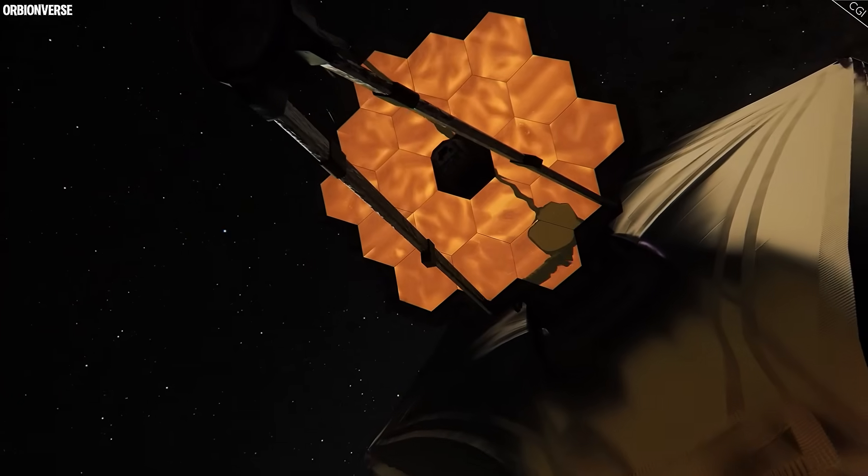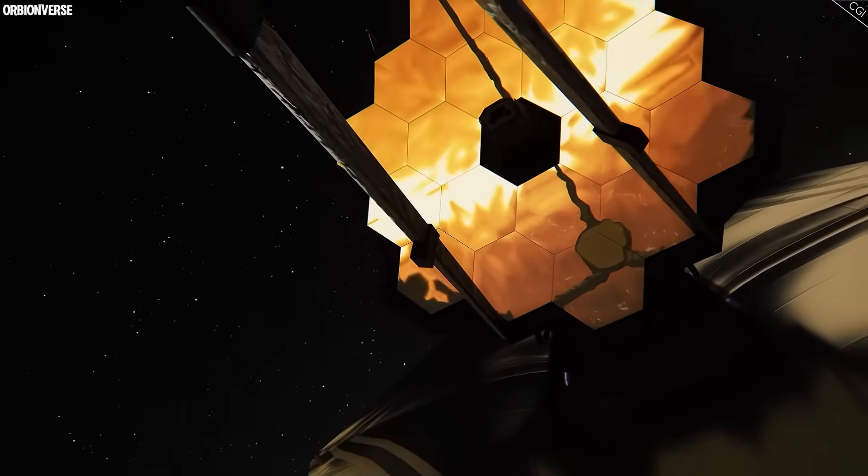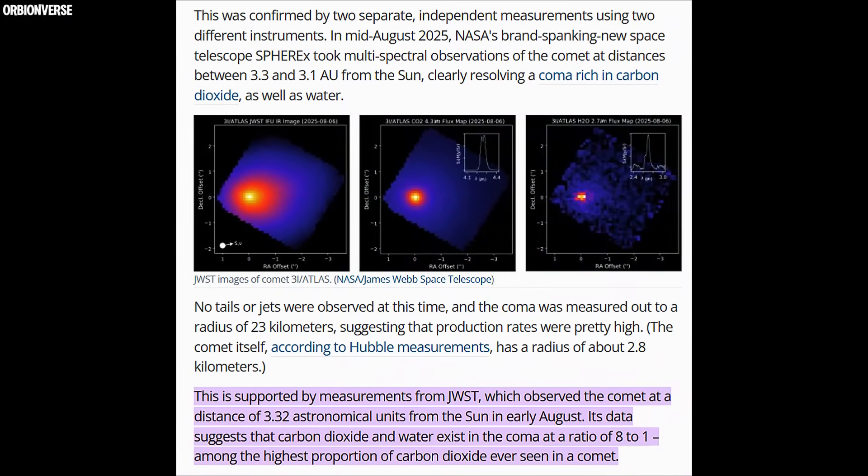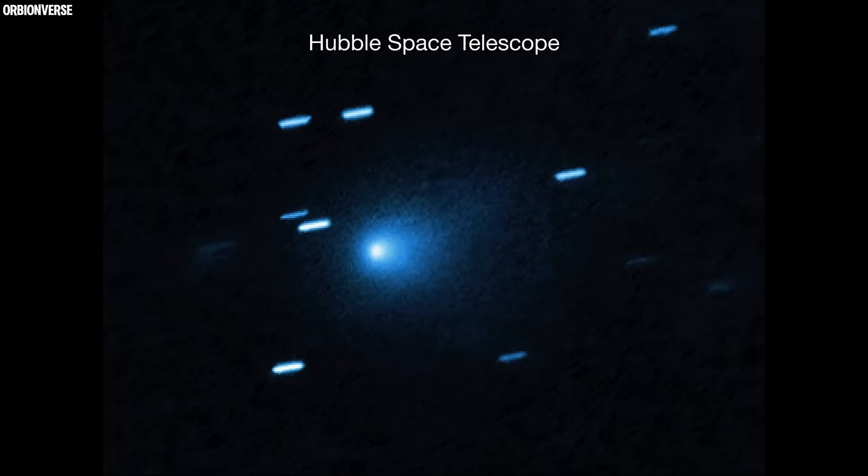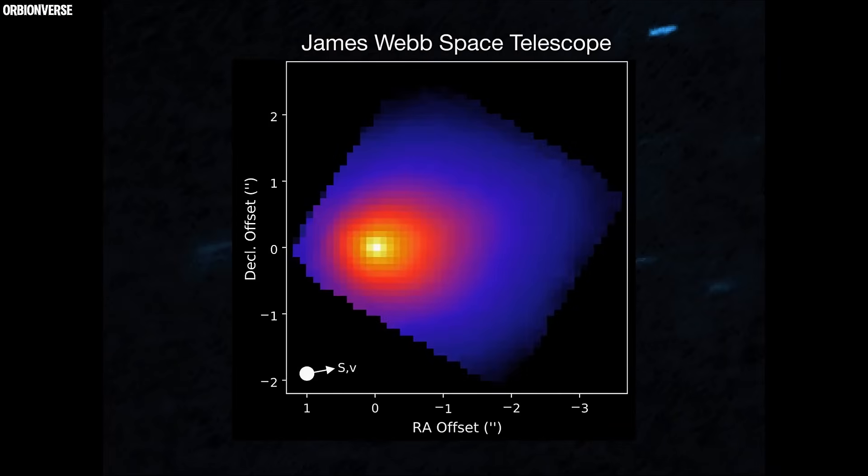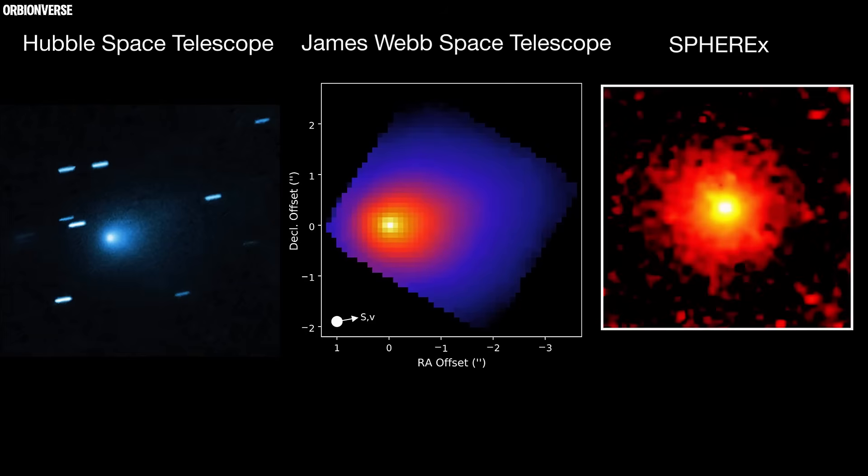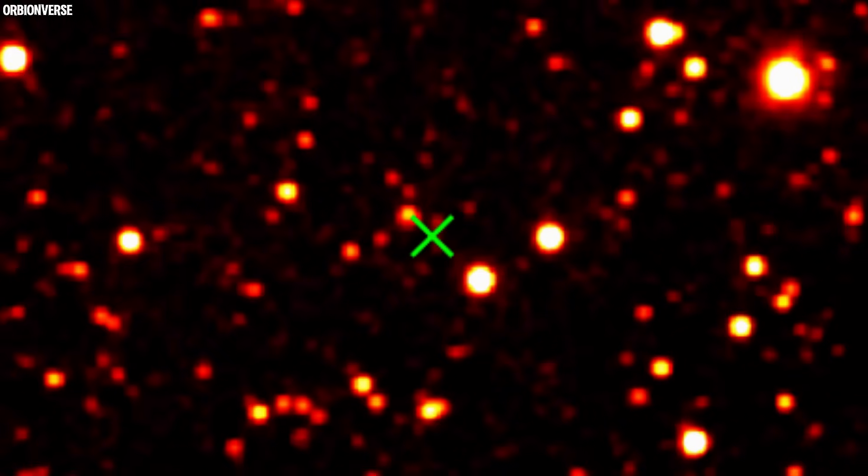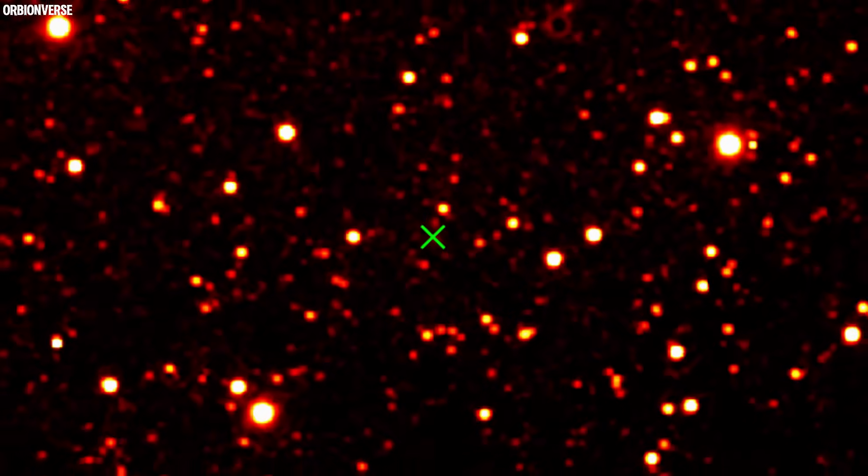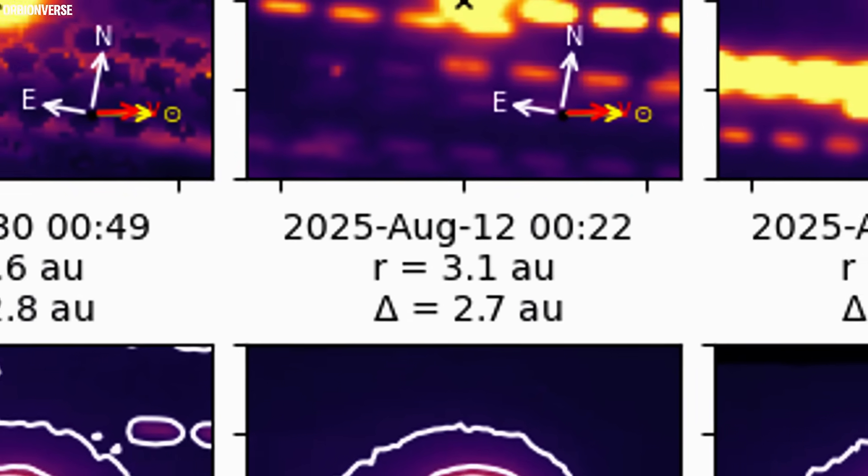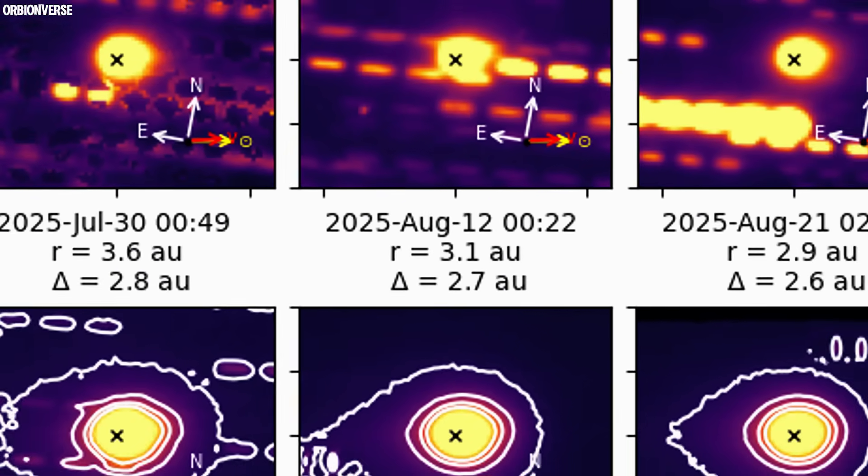Then came the breakthrough that stunned the world. The James Webb Space Telescope (JWST) was aimed at 3i-ATLAS while it was still inbound at 3.32 astronomical units. Using its NIRSpec instrument, Webb captured infrared spectra from 0.6 to 5.3 microns, mapping the comet's gases and dust with unmatched precision. What it found shocked astronomers. The coma was dominated by carbon dioxide (CO2), far more than water.